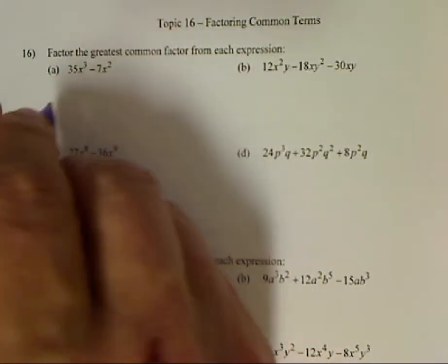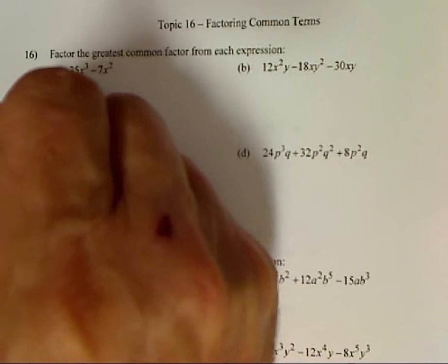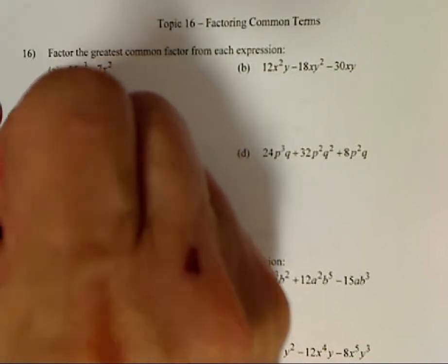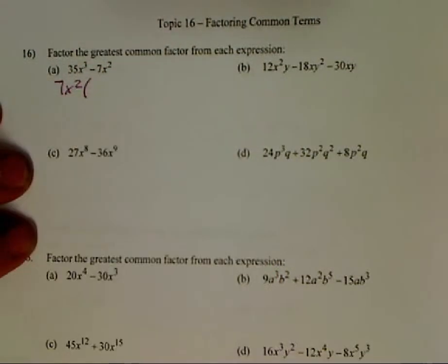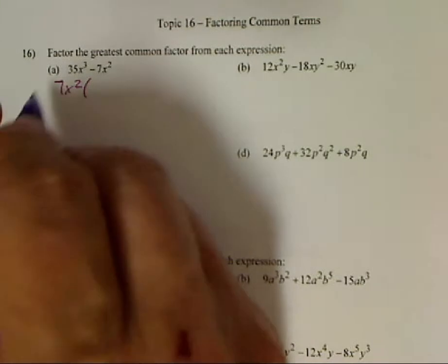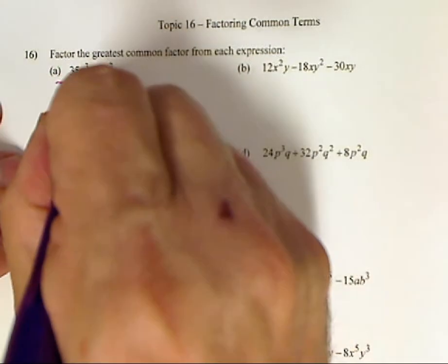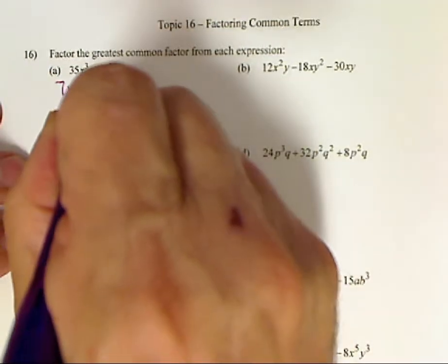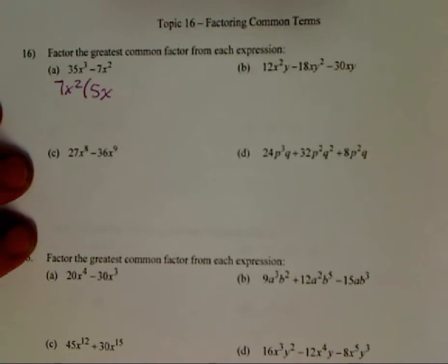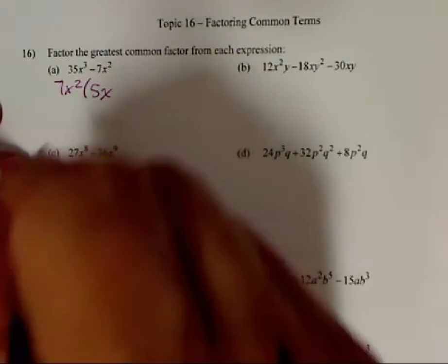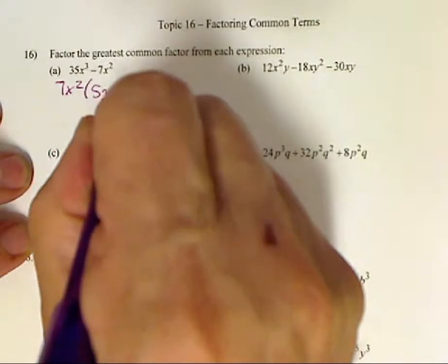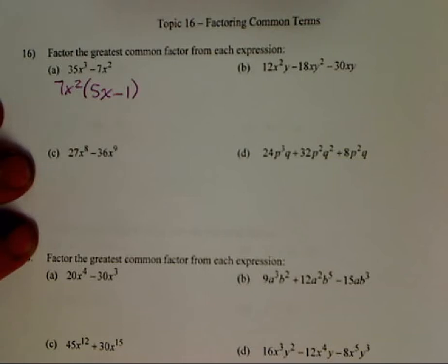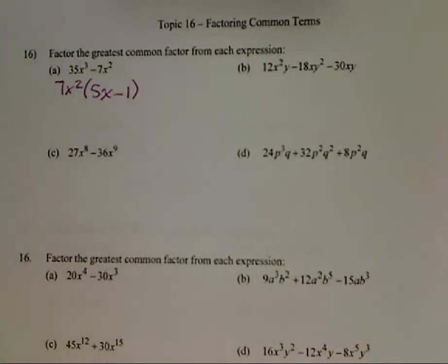So when I do this I'll take out 7x squared then I've got to think about what do I multiply by to get what's remaining. So 7 times 5 equals 35. x squared times x. And then 7x squared times negative 1 will give me negative 7x squared.